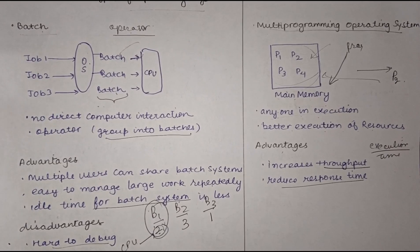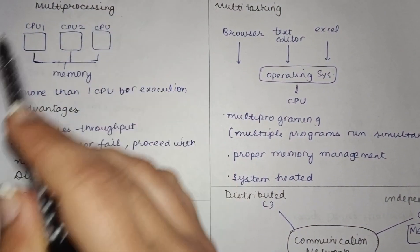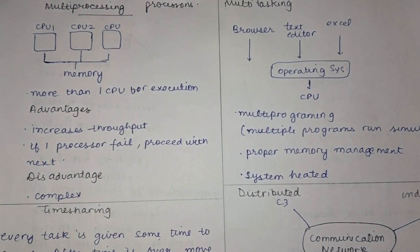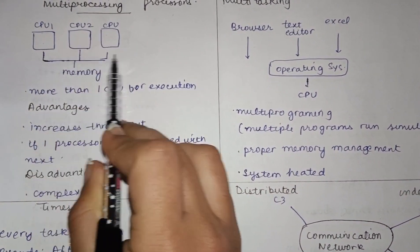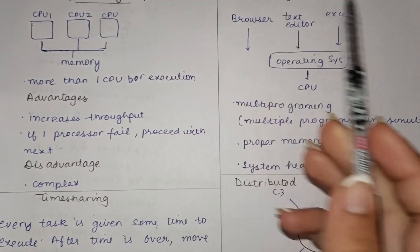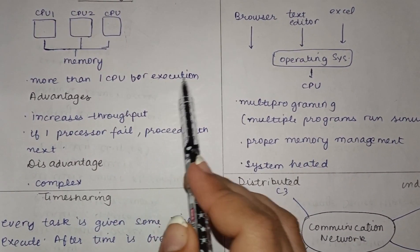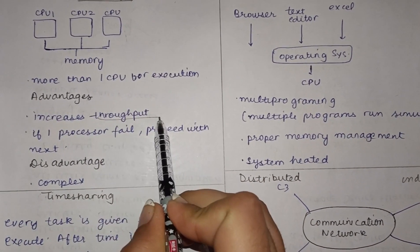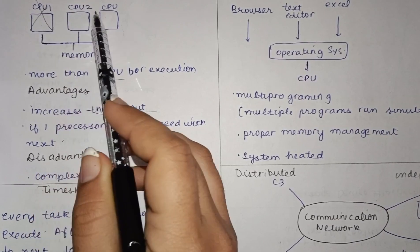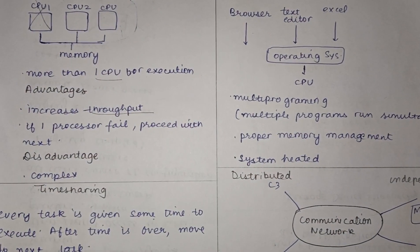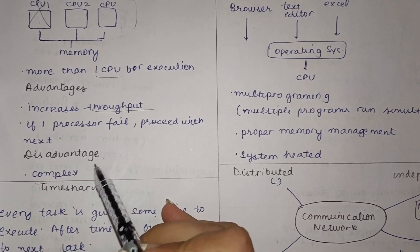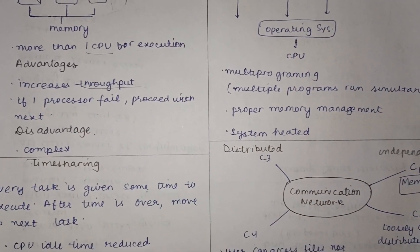The multi-processing operating system uses multiple processors, meaning multiple CPUs, to process data simultaneously. Advantages include increased throughput because more than one CPU works at the same time, and if one processor fails, the task can be given to another processor so processing can continue. The only disadvantage is that it is complex to manage because of the multiple CPUs.